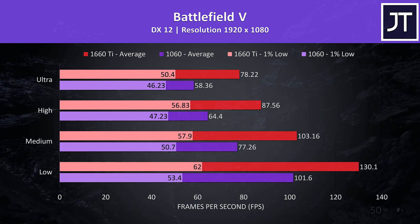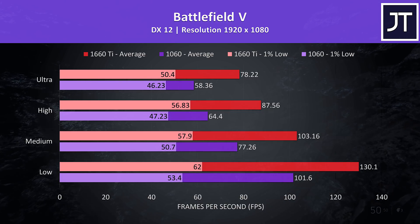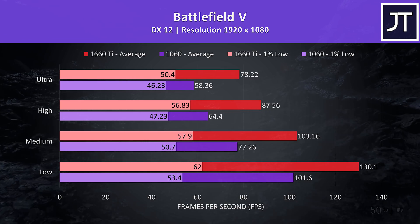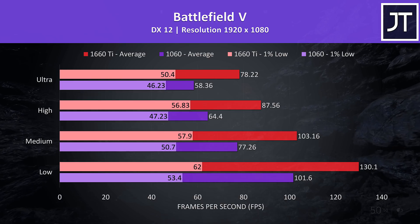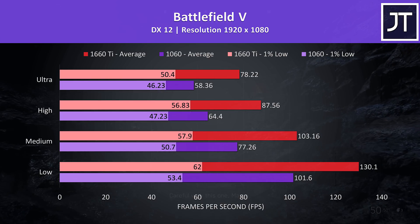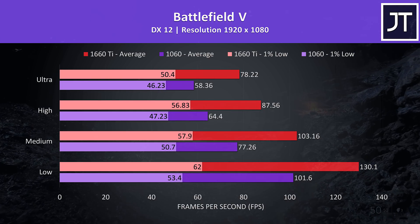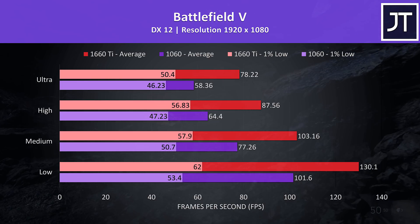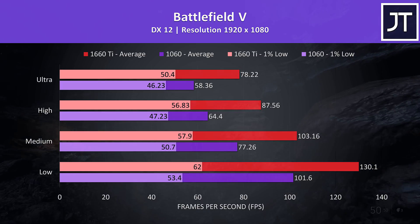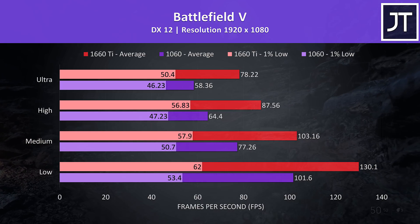Battlefield 5 was tested in campaign mode running through the same section of the game on both machines. The 1% low difference wasn't that big, meanwhile in terms of average frame rate the 1660 Ti was 34% faster at ultra settings.